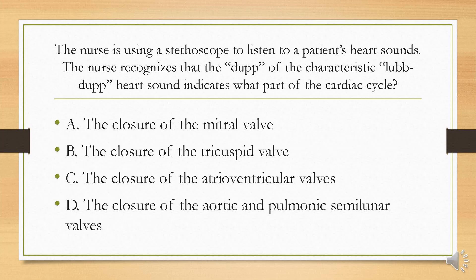The nurse is using a stethoscope to listen to a patient's heart sounds. The nurse recognizes that the DUP of the characteristic lub-dup heart sound indicates what part of the cardiac cycle. Is it A, the closure of the mitral valve; B, the closure of the tricuspid valve; C, the closure of the atrioventricular valves; or D, the closure of the aortic and pulmonic semilunar valves?